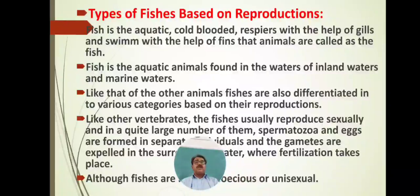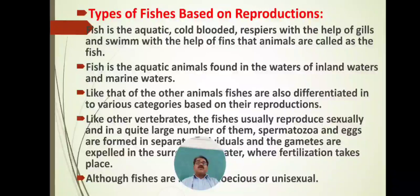Cold-blooded animals do not generate heat inside the body. They respire with the help of gills and they can swim, moving from one place to another, from one water body to another with the help of fins. Fish is the aquatic animal found in the waters of inland and marine environments. Like other animals, fishes are also differentiated into various categories based on their reproduction.